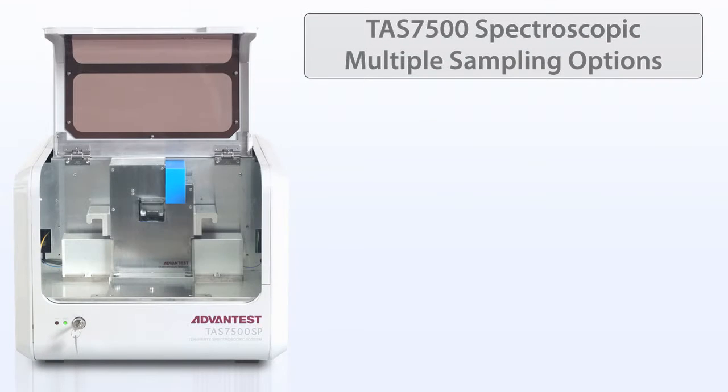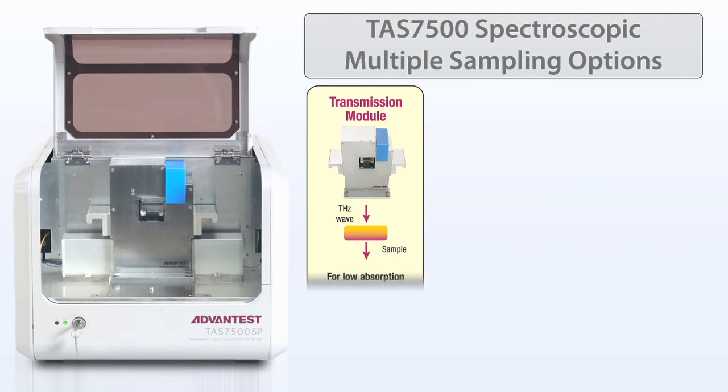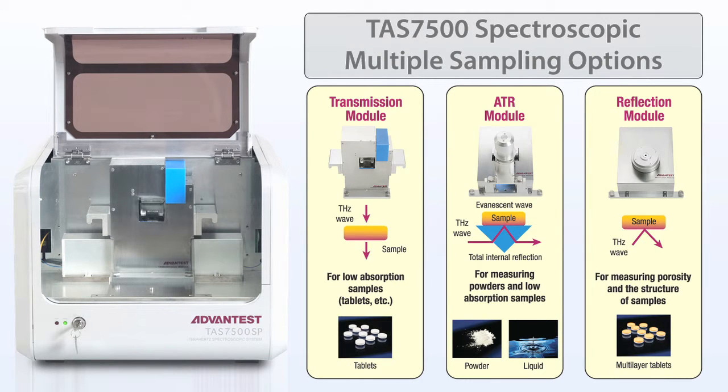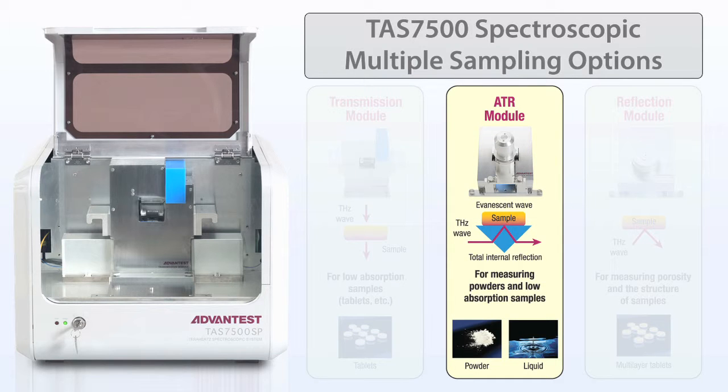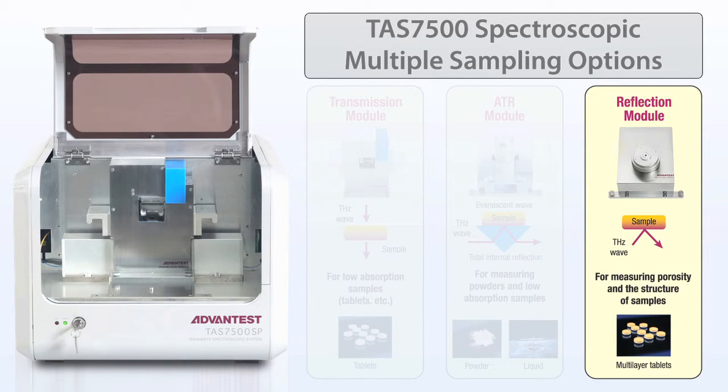The TAS7500 spectroscopy unit has multiple sampling options, like those used for infrared, including transmission, attenuated total reflectance or ATR, and external reflectance.